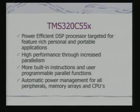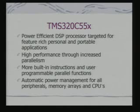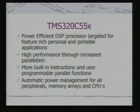The first processor we are looking at is again from TI — the C55X architecture. This is a power-efficient DSP processor targeted for personal and portable applications like cellular phones. The basic difference with the earlier architecture is improved efficiency with parallelism in instruction execution, and another feature is an automatic power management mode in a much more elaborate fashion than before.